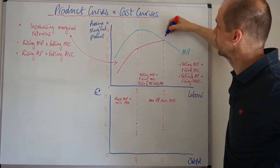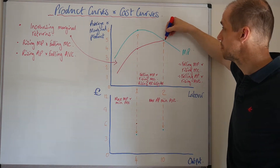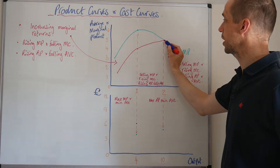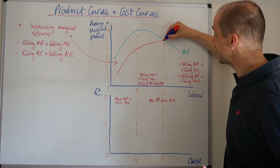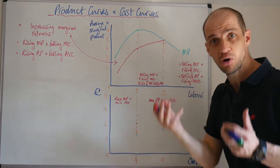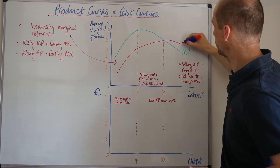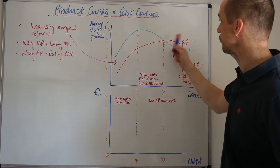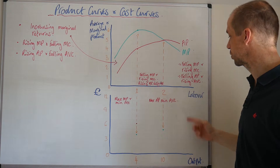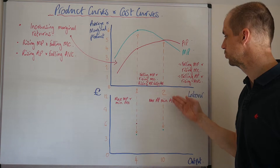This high point occurs because here the marginal product is still pulling up the average. As soon as the average product is greater than the marginal product, the marginal is then going to start pulling down the average product. The average product reaches its maximum at this point, at a labor level of two workers.